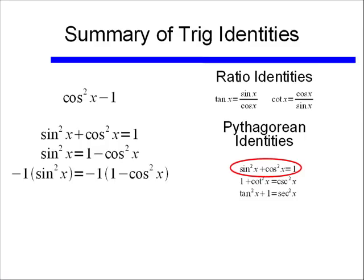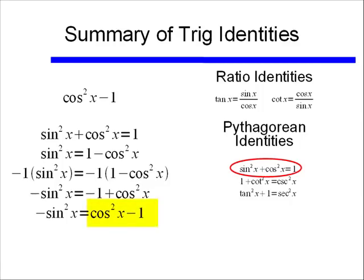And if I do that to both sides, then I get negative sine squared x equals negative 1 plus cosine squared x, or if I want to rewrite that so it exactly matches what I have, I see that cosine squared x minus 1 simply equals negative sine squared x.